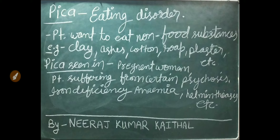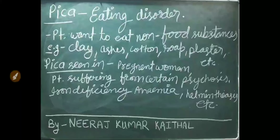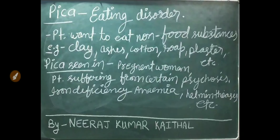Examples of non-food substances eaten in PICA include clay, ashes, cotton, soaps, plaster, etc. This PICA condition is mostly seen in pregnant women, patients suffering from certain types of psychosis, and patients suffering from iron deficiency anemia.